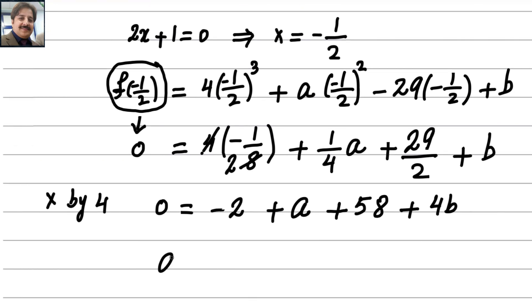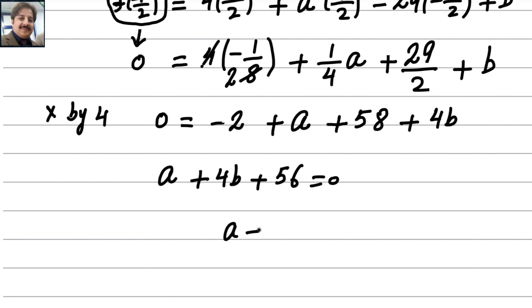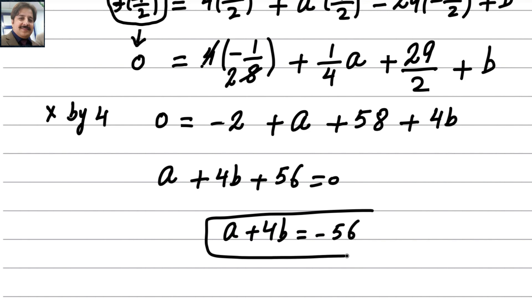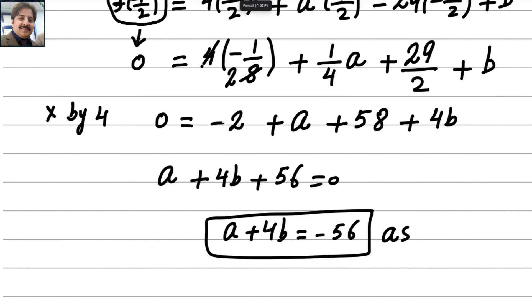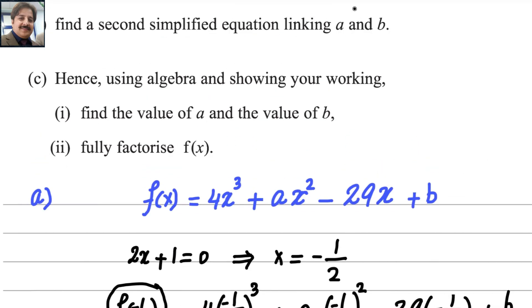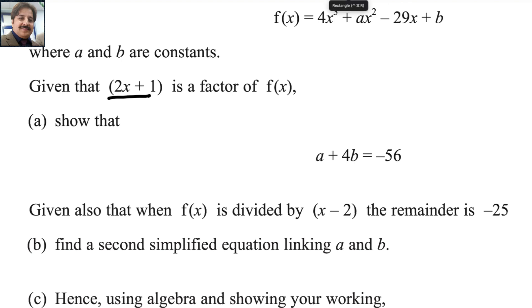Therefore, we can write negative 2 plus a plus 58 plus 4b equals 0, which simplifies to a plus 4b plus 56 equals 0, and so a plus 4b equals negative 56, as required.